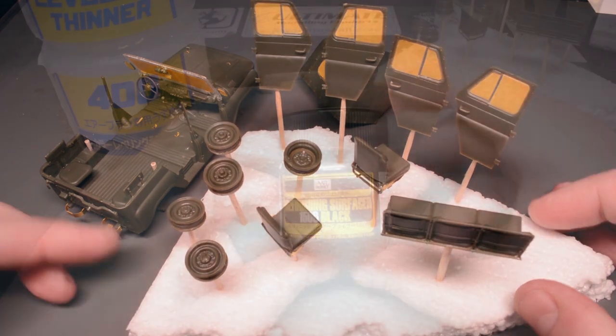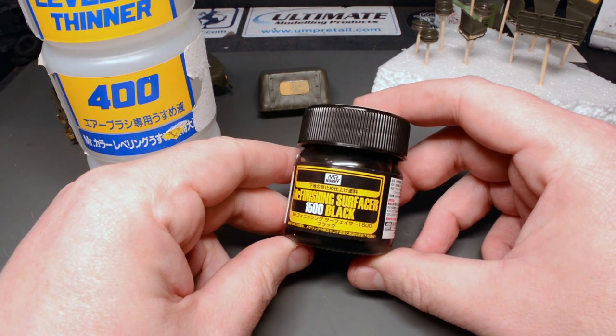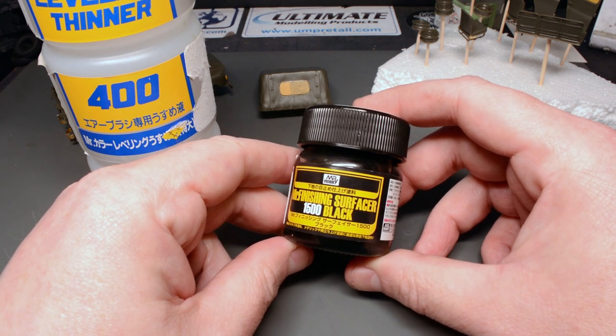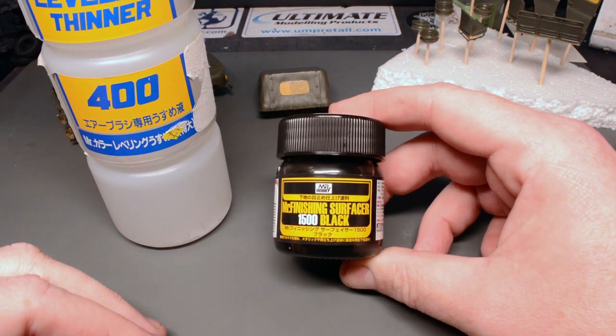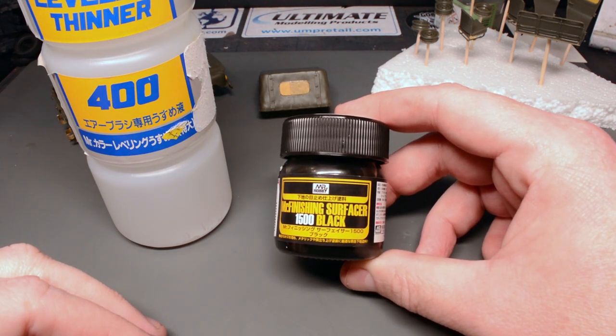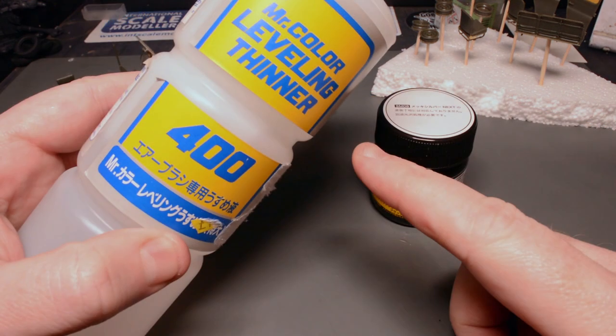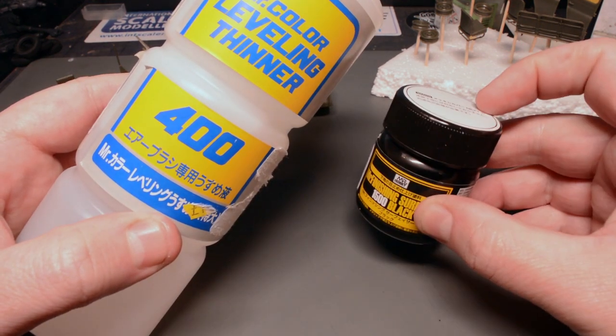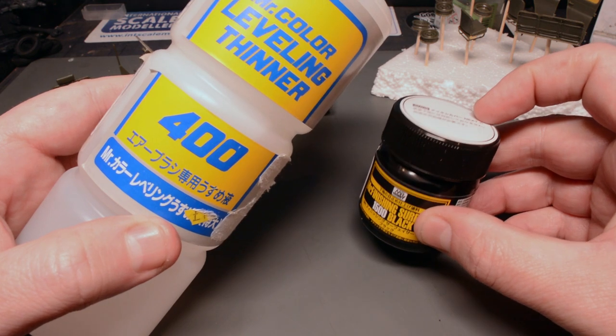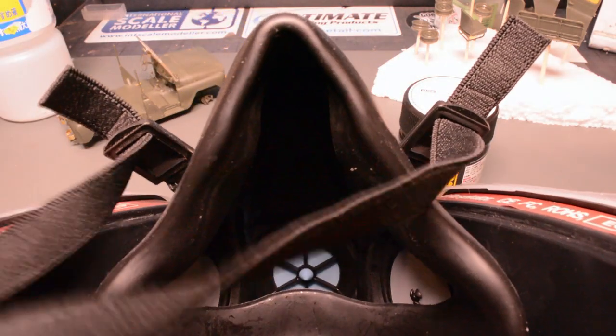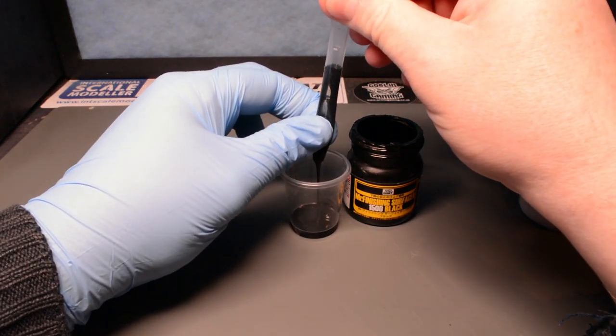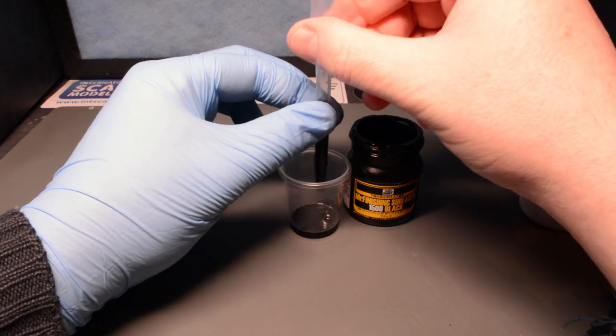I decided that instead of using my trusty UMP black primer I would try out using Mr Finishing Surfacer 1500 in black which is a lacquer base primer. To get the surfacer ready for the airbrush it had to be thinned down and for this I used Mr Colour levelling thinners. This is a lacquer thinner with a drawing retardant so it stays wet for longer and settles down to a nice smooth finish. It also produces horrific fumes so I got masked up and in the background you can see an extractor unit which was also used to remove any of those bad smells.